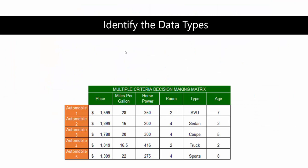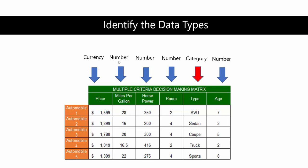First, you want to be able to identify the different data types. We have a collection of different data types: currency, number, and category. We want to be able to scale these to a similar level, also known as normalizing. We also have a category that we need to turn into a number prior to normalizing our data.